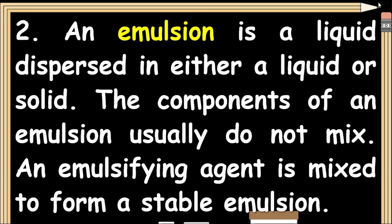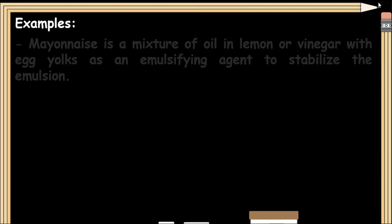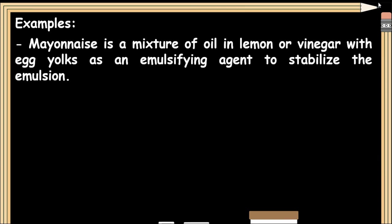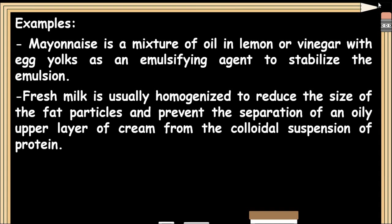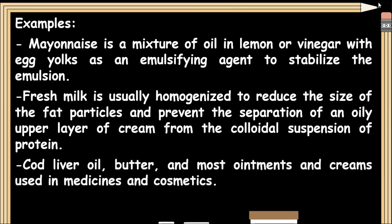An emulsion is a liquid dispersed in either a liquid or solid. The components of an emulsion usually do not mix, so an emulsifying agent is added to form a stable emulsion. Examples include mayonnaise, which is a mixture of oil in lemon or vinegar with egg yolks as an emulsifying agent. Fresh milk is usually homogenized to reduce the size of fat particles and prevent separation of an oily upper layer of cream from the colloidal suspension of protein. Cod liver oil, butter, most ointments, and creams used in medicine and cosmetics are also emulsions. Toothpaste is another example.